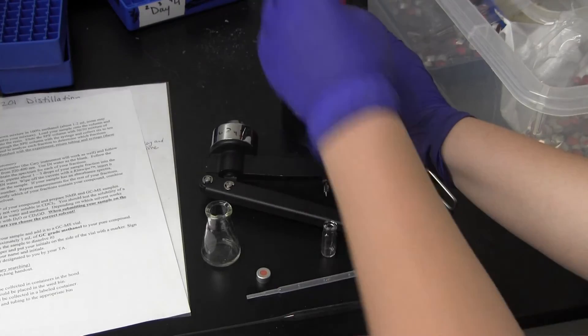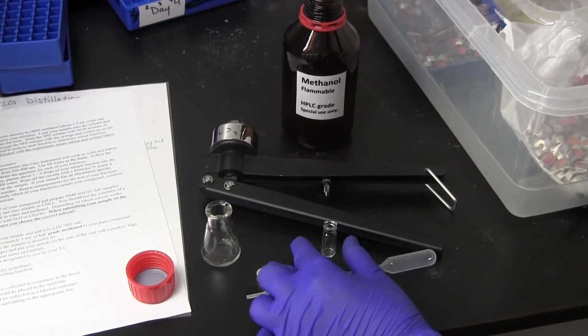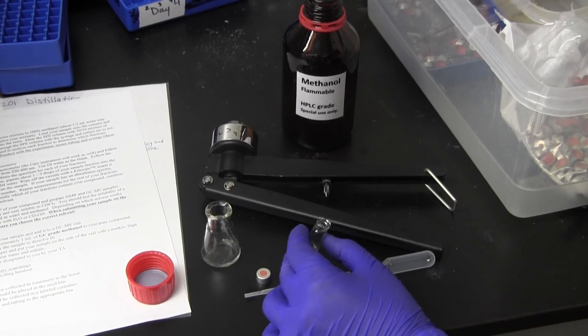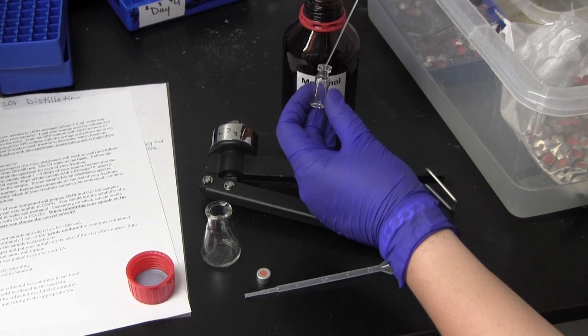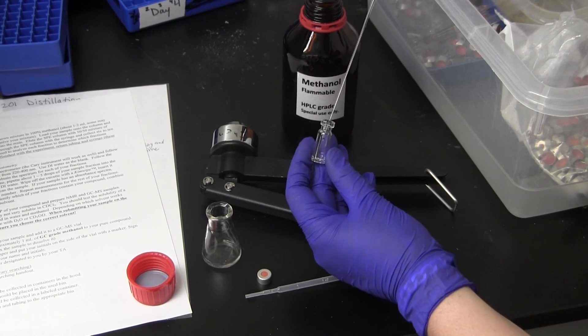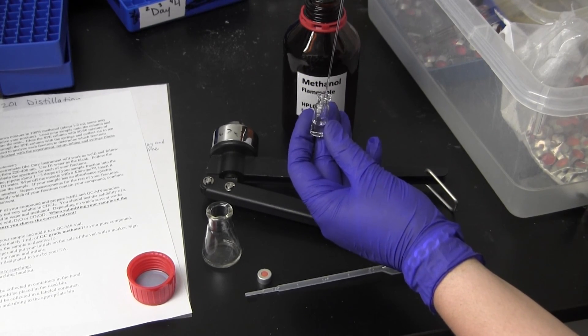Then use 2 or 3 drops from your NMR tube to submit a GC-MS sample. Remember to use regular methanol to dilute the GC-MS sample. Do not use deuterated methanol.